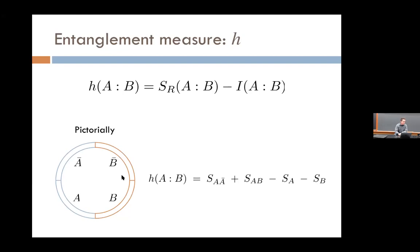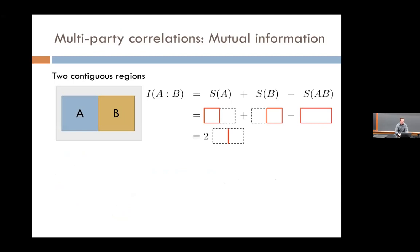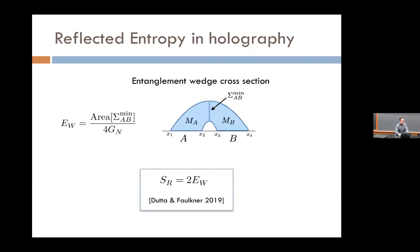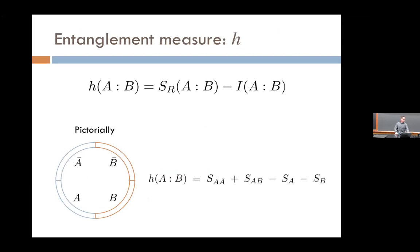The quantity H is the difference between reflected entropy and mutual information, and this H is claimed to be a nice universal UV-invariant measure of tripartite entanglement. Written out in terms of the canonical purification, it is a particular linear combination of entropies. It is not symmetric under cyclic permutations of A, B, C — H_AB will not equal H_BC — but it has a nice form as a conditional mutual information.